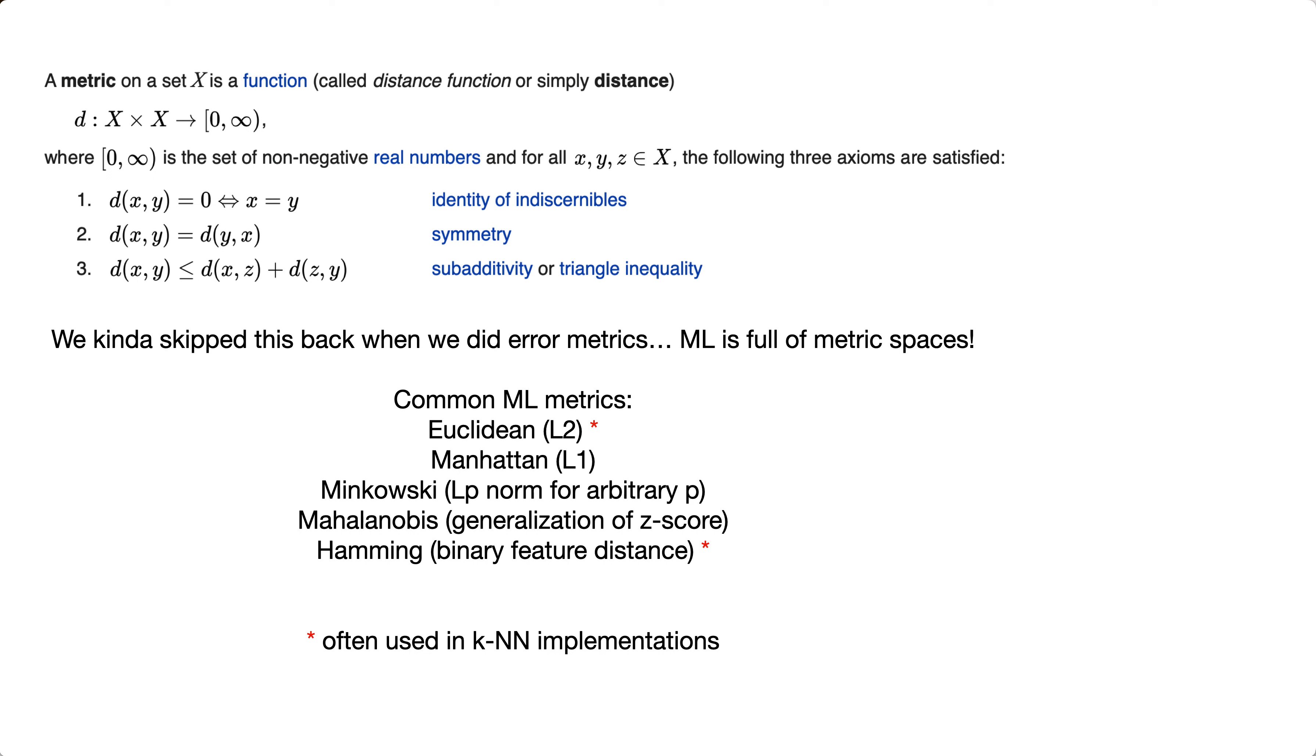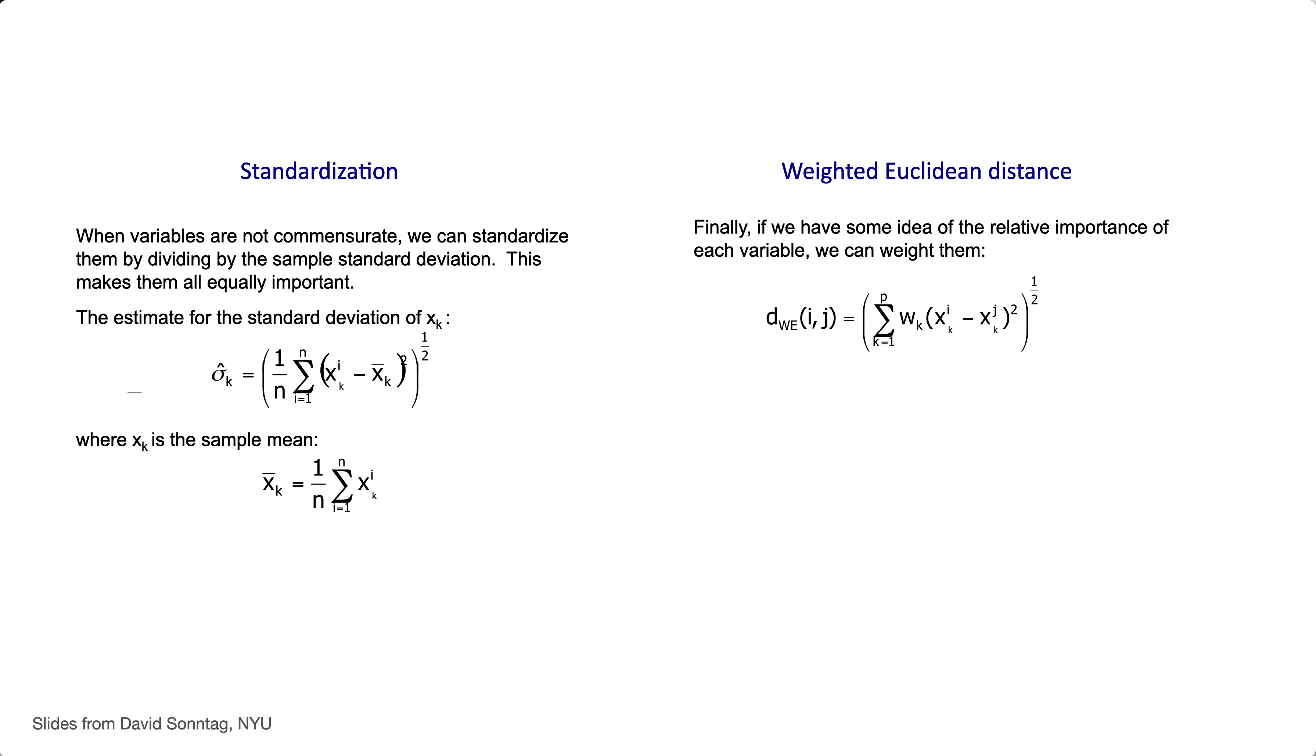So, some of these are specialized, like the Hamming distance is made for looking at binary feature vectors. If your entire data set consists of on-offs, if it consists of I lay eggs or I don't lay eggs, I fly or I don't fly, then the Hamming distance is a good one to use.